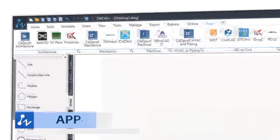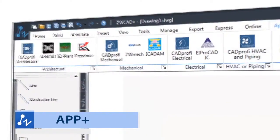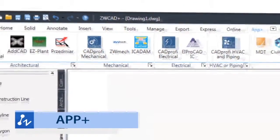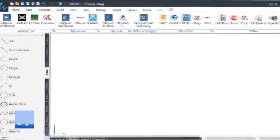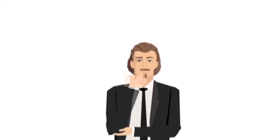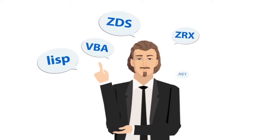He can also download apps to give him access to even more possibilities. Thanks to the API compatibility, all his favorite apps from other platforms are readily available. Wondering what programming interface Brian uses? Lisp, VBA, ZDS, ZRX, or .NET? All of the above are supported in ZWCAD Plus, so Brian can use whatever he likes, whenever he needs.